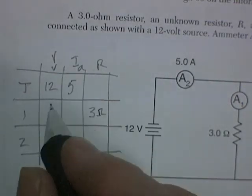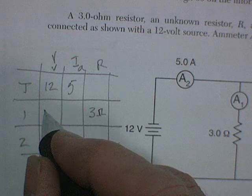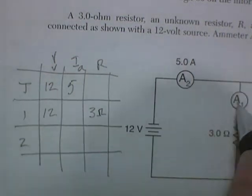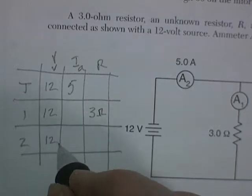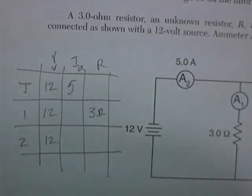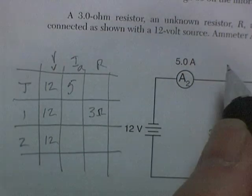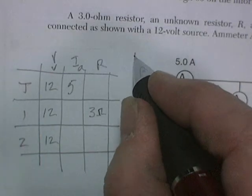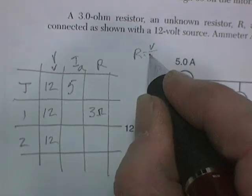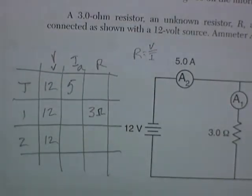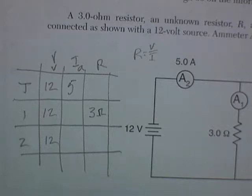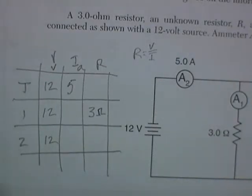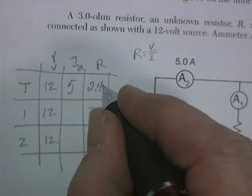So in our data grid, we can say that the total voltage here would be 12 volts, and the total voltage here would also be 12 volts. We can then find any of the resultants. Let's find this total resistance. We know that resistance equals voltage divided by current. So the total resistance is going to be 12 volts divided by 5 amps. My calculator says that's 2.4 ohms.